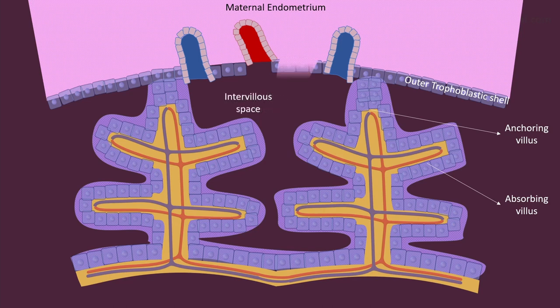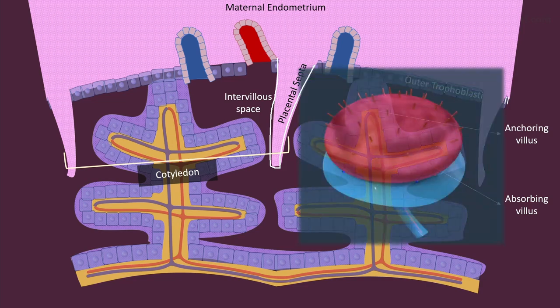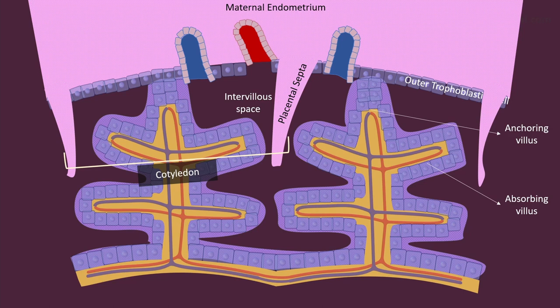Finger-like processes arise from the decidua basalis of the maternal endometrium and they divide the placenta into incomplete divisions called cotyledons. There are about 15 to 20 cotyledons in the placenta, and because of these cotyledons there is a cobblestone appearance of the placenta. Each cotyledon consists of two or more branched tertiary villi, but in this diagram due to lack of space only a single branched tertiary villus is shown per cotyledon.